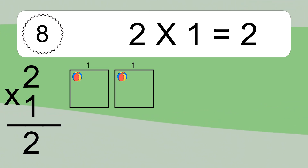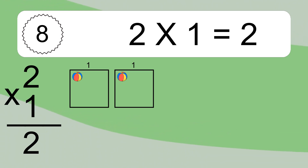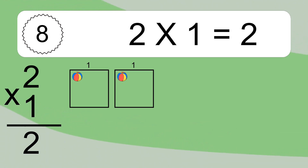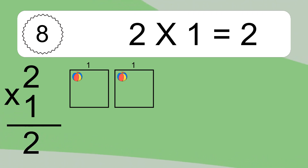We have two boxes and each box has one colorful ball inside. If you count all the balls in all the boxes together, you will have two times one balls. This equals two balls.